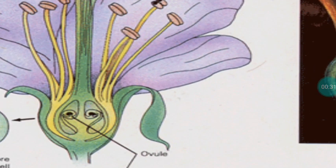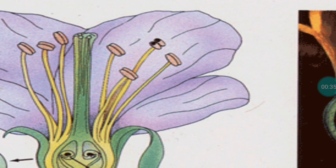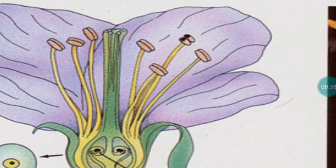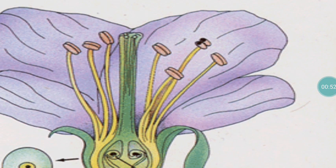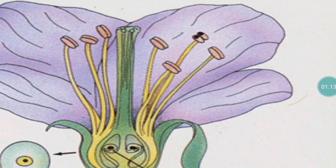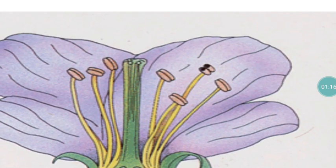Here you can see a filament, which will have an anther sac. Within the anther sac, pollen grains are available. Pollen grains are the male gametophyte — each pollen contains two male nuclei. The pollen grains will be released at the time of maturation of the anther sac. The anther sac will burst and release the pollen grain, which will then reach the stigma — the female organ.